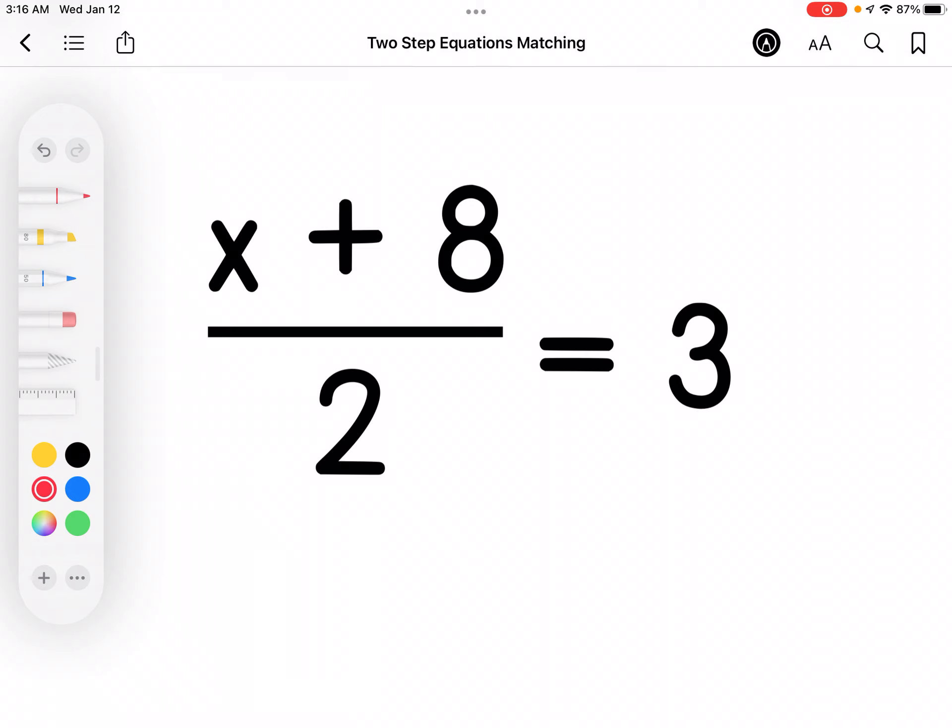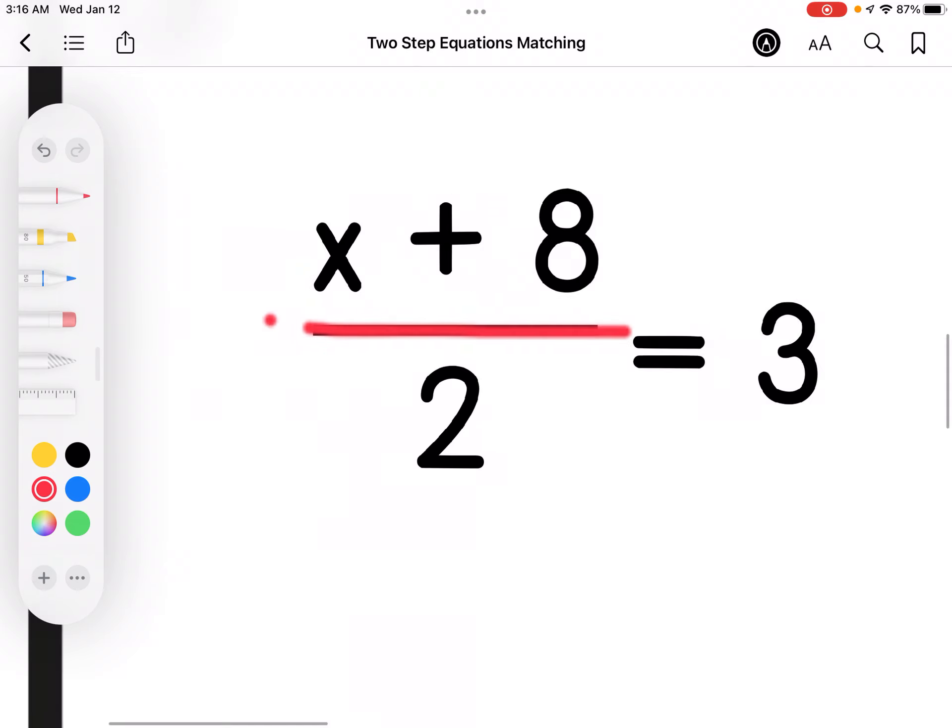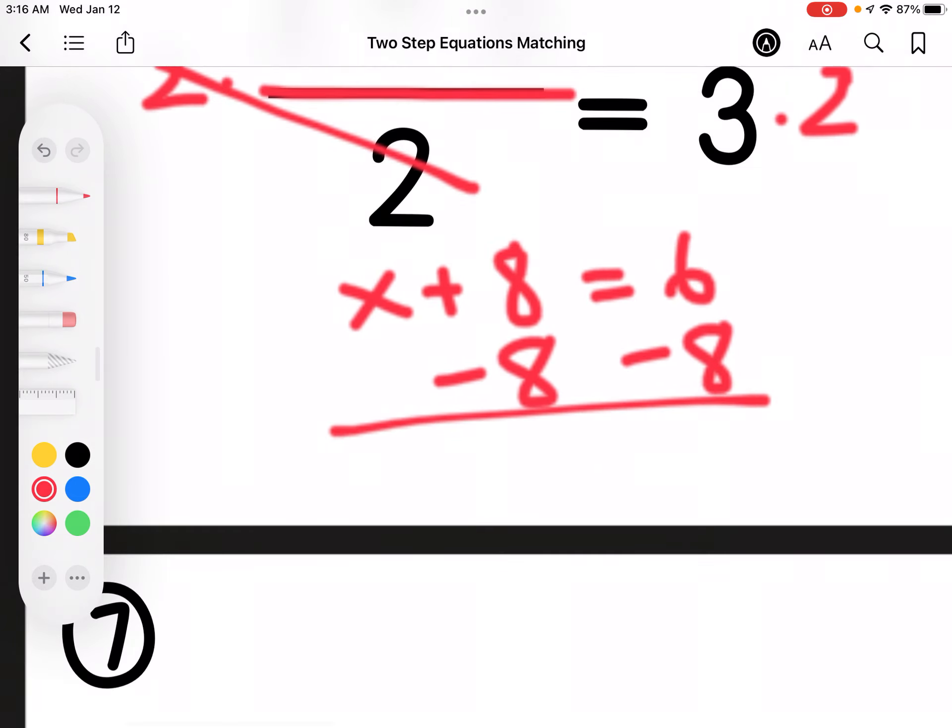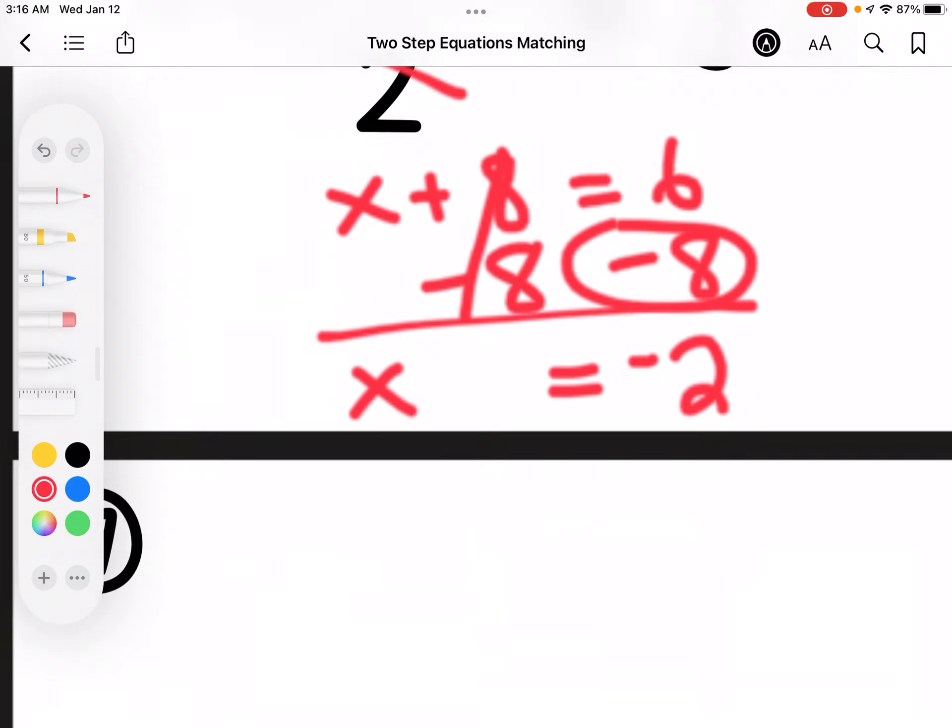This one's a little bit different because you're dividing the whole quantity by 2. So you have to clear that denominator first. So I'm going to multiply both sides of the equation by 2 first. So 2 divided by 2 is 1, so I'm left with x plus 8 equals 6. So I'm going to subtract 8 on each side. 8 minus 8 is 0. So x equals, signs are different, so I subtract, I get 2, and there are more negatives than there are positives, so it's going to be a negative 2.